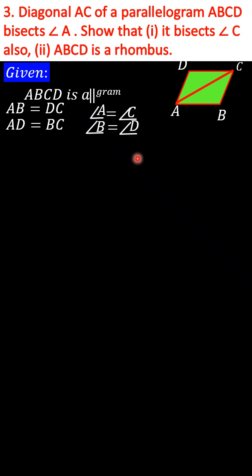It is given ABCD is a parallelogram. In a parallelogram, opposite sides are equal and also opposite angles are equal. So we can say AB is equal to DC and AD is equal to BC. Angle A is equal to angle C, and angle B is equal to angle D.